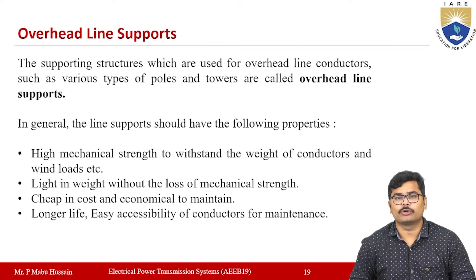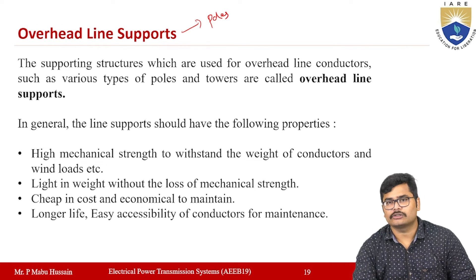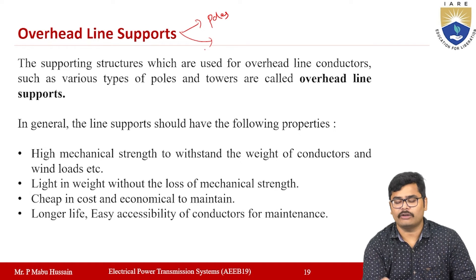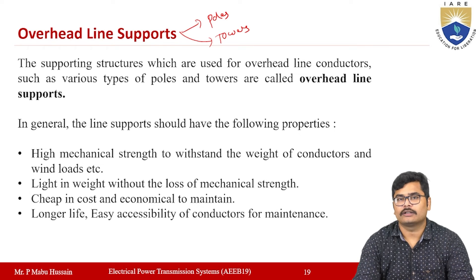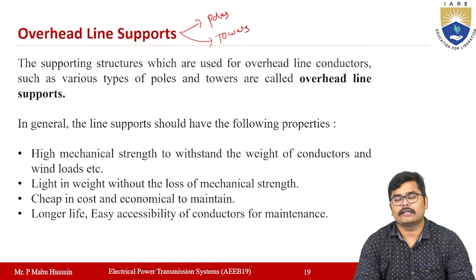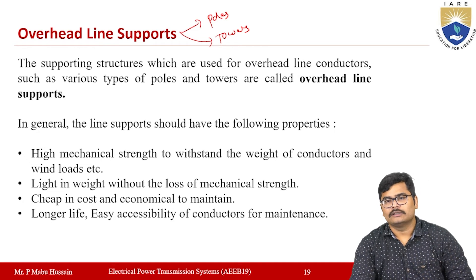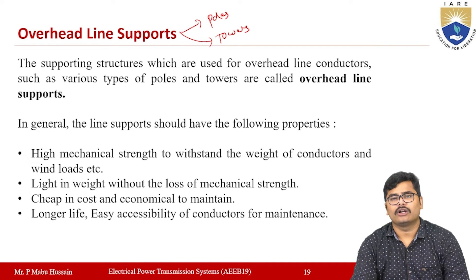Now, regarding overhead line supports — the supports may be either poles for low voltage levels or towers for high voltage. These supporting structures are used in overhead transmission line systems for supporting the line conductors. There are various types of poles and towers used in transmission line systems.